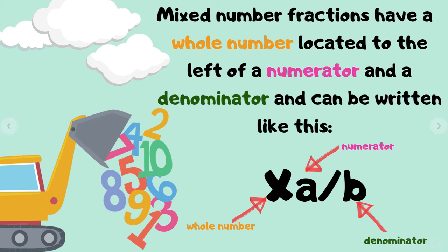Mixed number fractions have a whole number located to the left of a numerator and a denominator, and it can be written like this: X A over B.